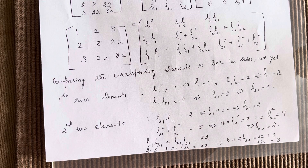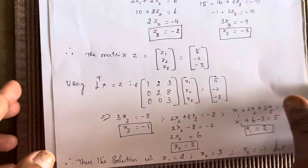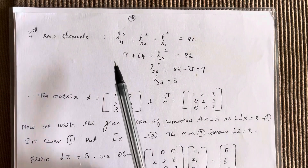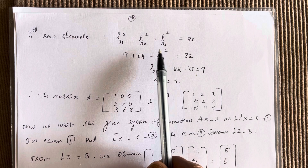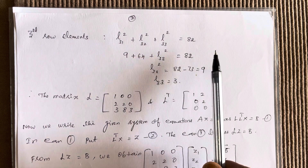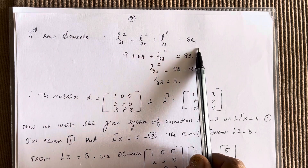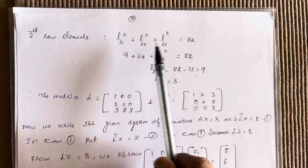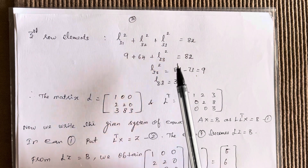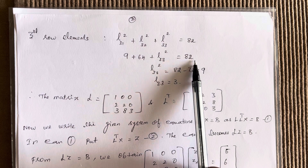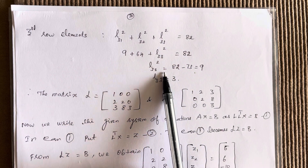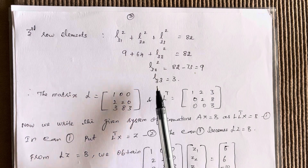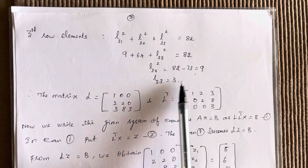Now checking the third row elements: L31 squared plus L32 squared plus L33 squared equals 82. We already found L31 equals 3 and L32 equals 8. So L33 squared equals 82 minus 73, which is 9, and taking the square root gives L33 equals 3.